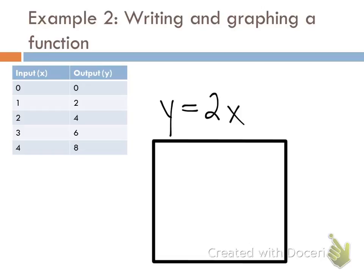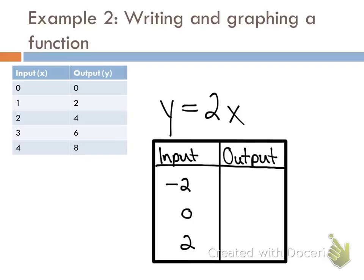you're going to set up an input-output table and this is exactly what it's going to look like on your homework. Okay, you need to set up an input-output table and the domain that I want you to use on this example and on your homework tonight is negative 2, 0 and 2. You're going to use those three numbers on all four homework questions tonight.